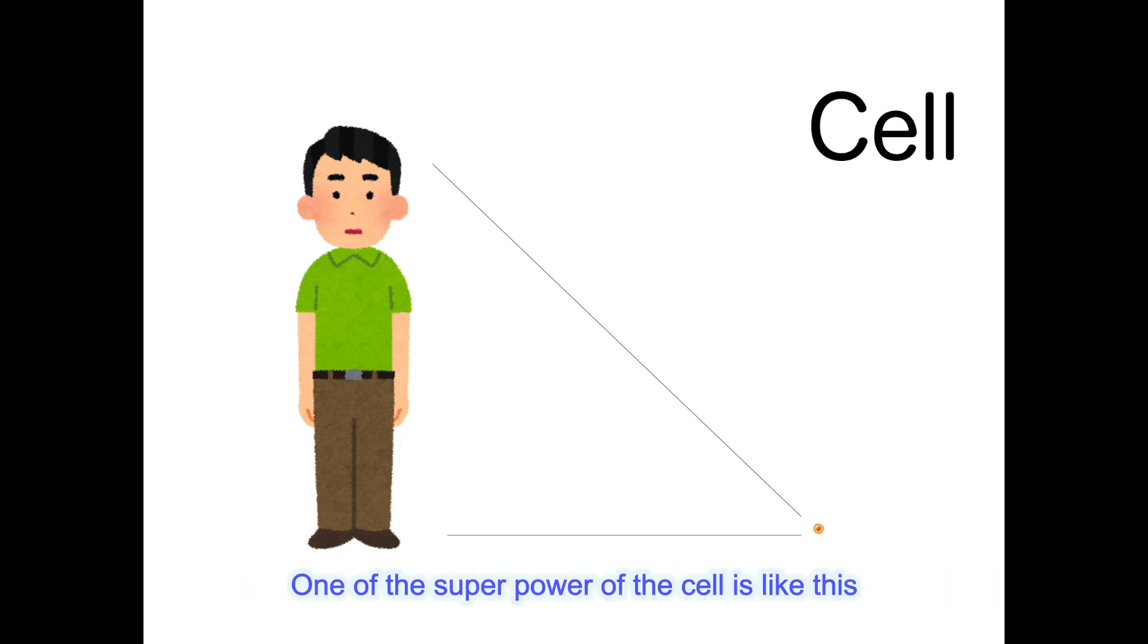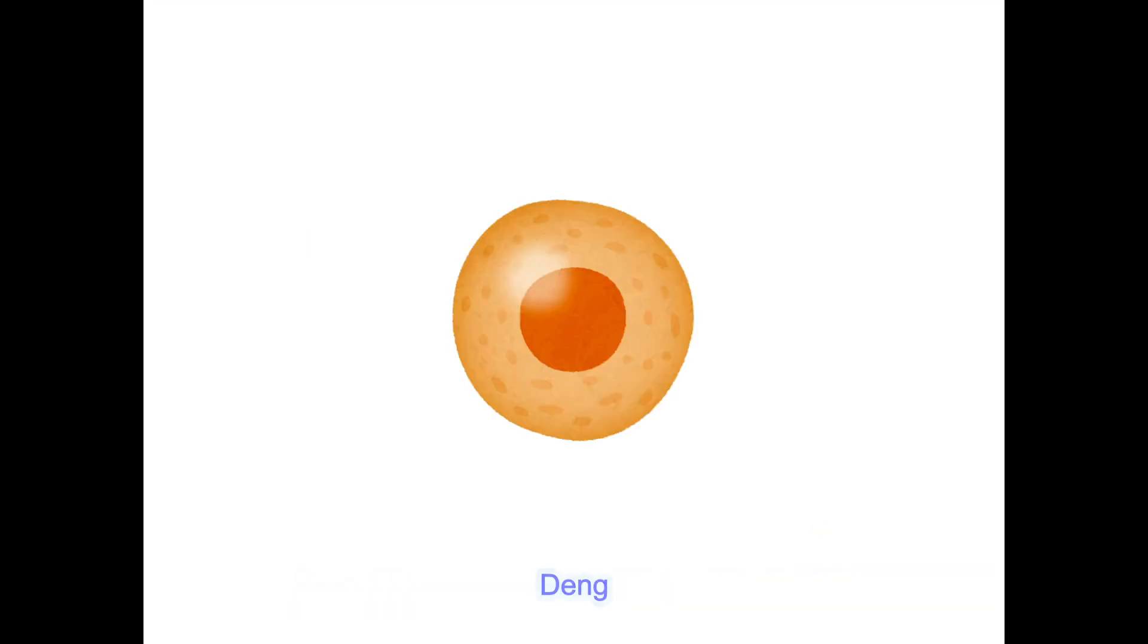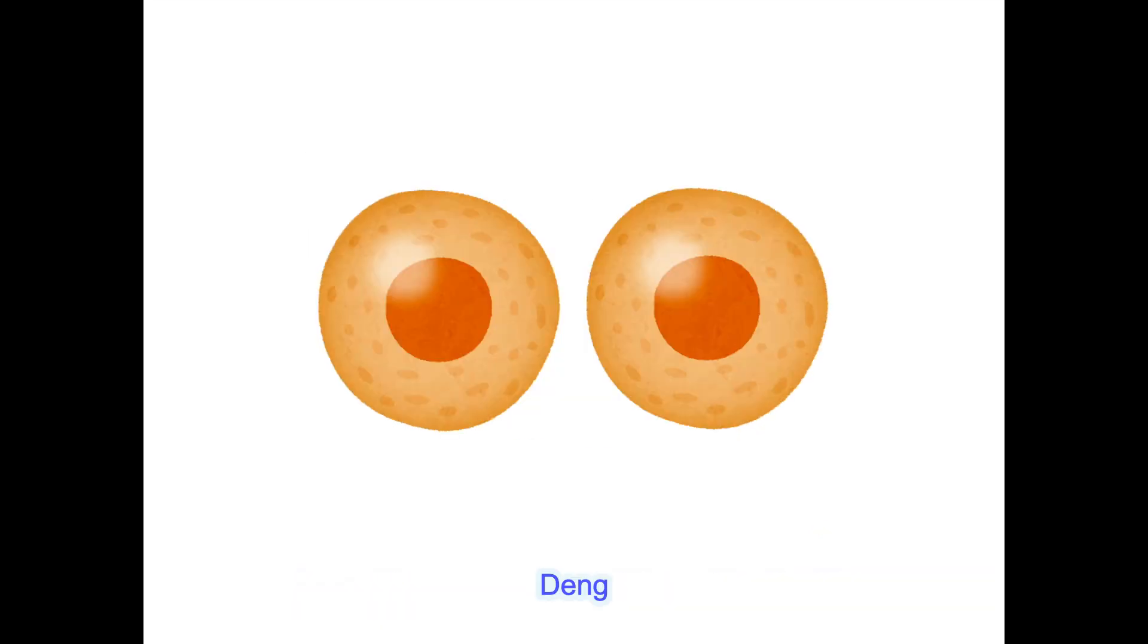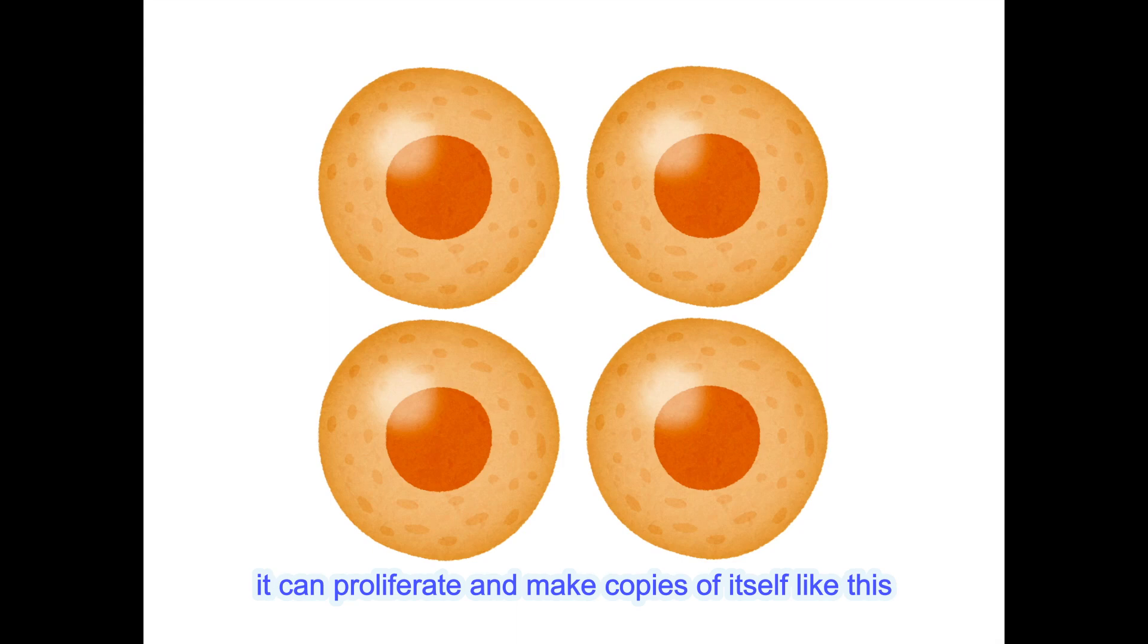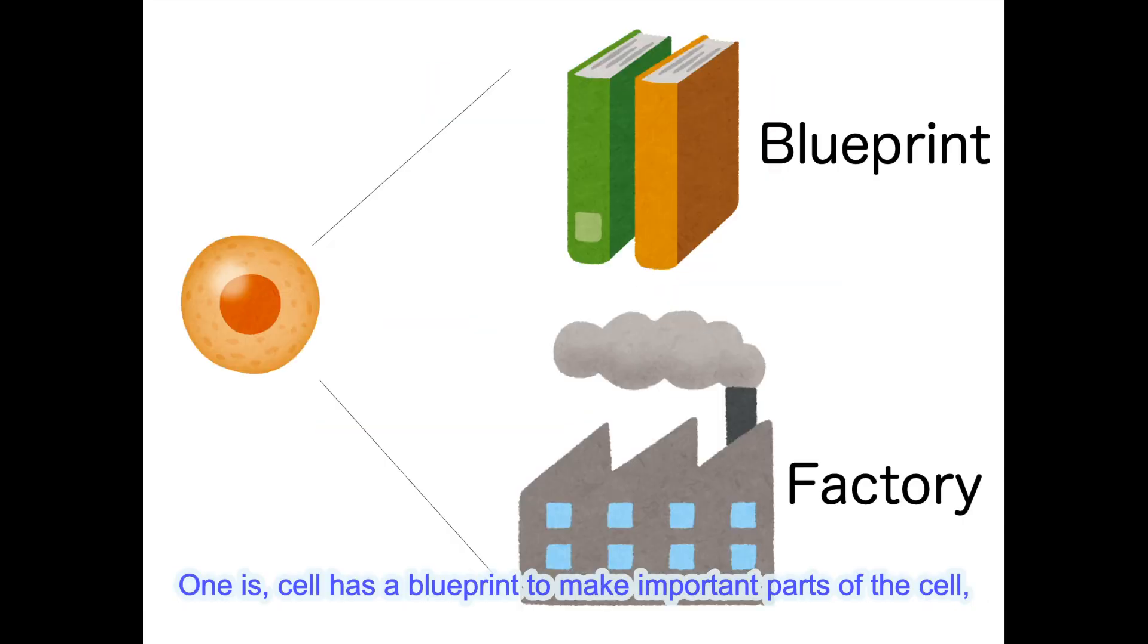One of the super powers of the cell is like this. It can proliferate and make copies of itself. There are two important features that contribute to this super power. One is, cell has a blueprint to make important parts of the cells. Another one is, it has its own factory to make different parts.